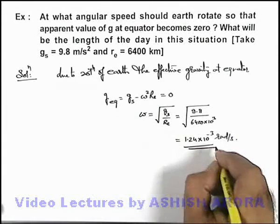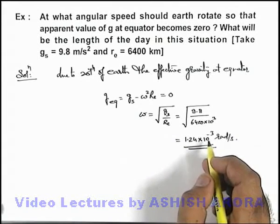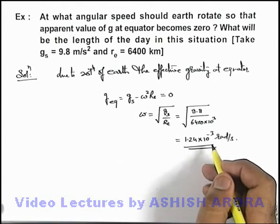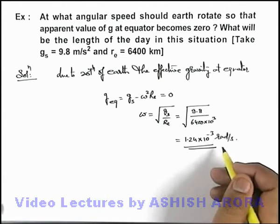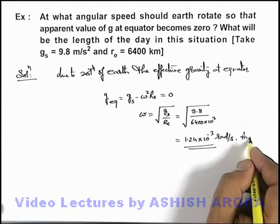That'll be the angular speed at which, when Earth rotates, then we can say that apparent value of g at equator becomes zero. That'll be the answer to this problem.